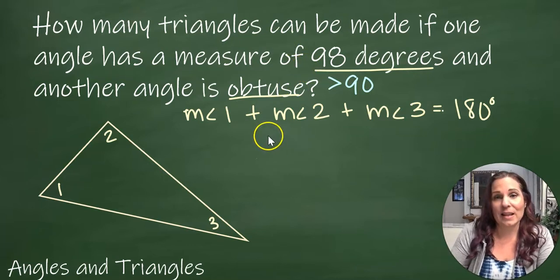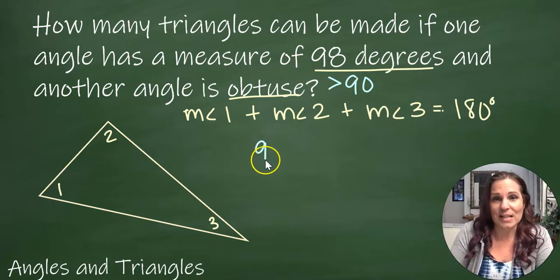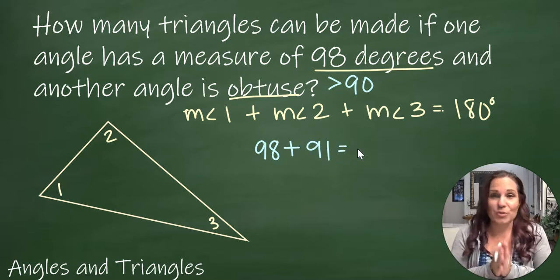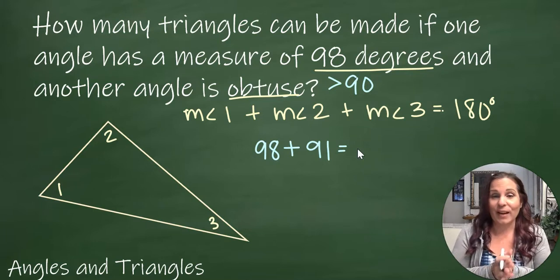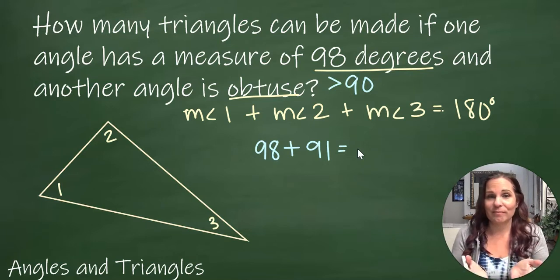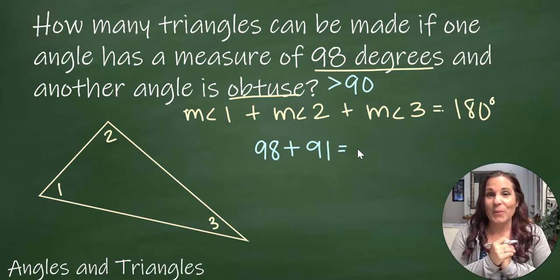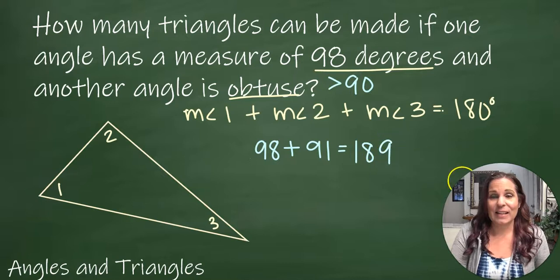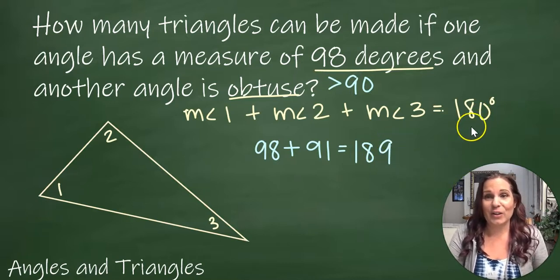So let's say that one angle is 98 and let's say that the other angle is 91. If I add just those two angles together, I get 189.